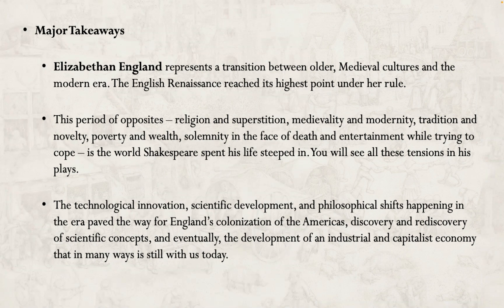Elizabethan England represents a major transition period — a transition between older medieval cultures and the modern era. It represents a lot of opposites: the clash of religion and superstition, of medievality and modernity, of tradition and novelty, of poverty and wealth, of solemnity in the face of death and entertainment as a way to cope. All of this is the world that Shakespeare spent his life steeped in from his earliest days through until his death, and you're going to see everything we've talked about show up in various corners of his work. For all these reasons, this was considered the height of the English Renaissance.